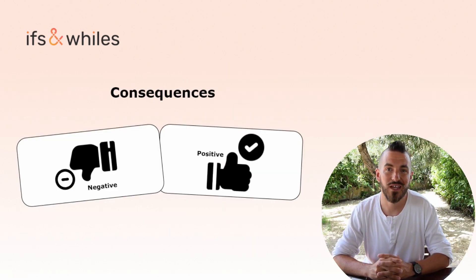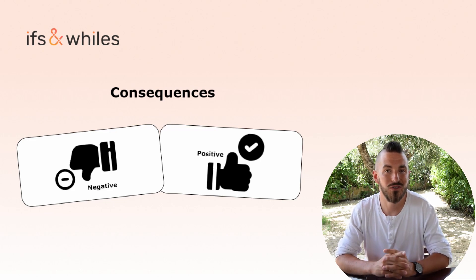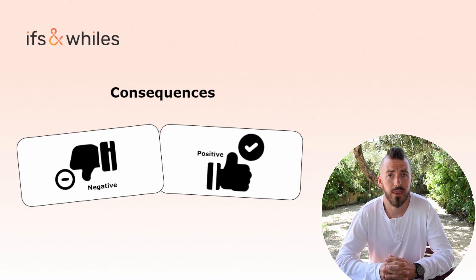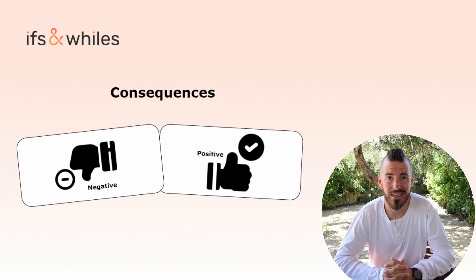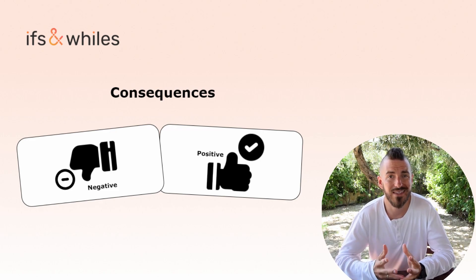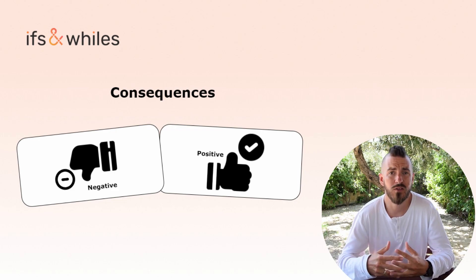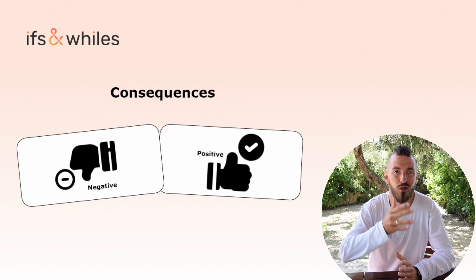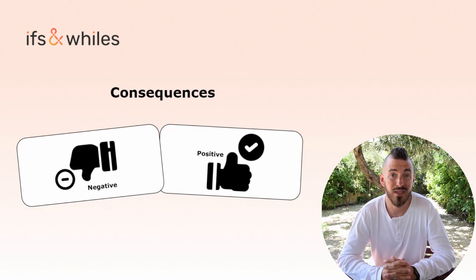Now you should know what are the consequences of using JWT. First: compromised key. JWT is based on encryption using a key. When this key is somehow stolen, an attacker can impersonate any user as soon as they know the user's ID and access all resources. There is only one possible solution in that situation: generate a new key and deactivate all existing tokens. But it means that every user needs to log in again to the application.